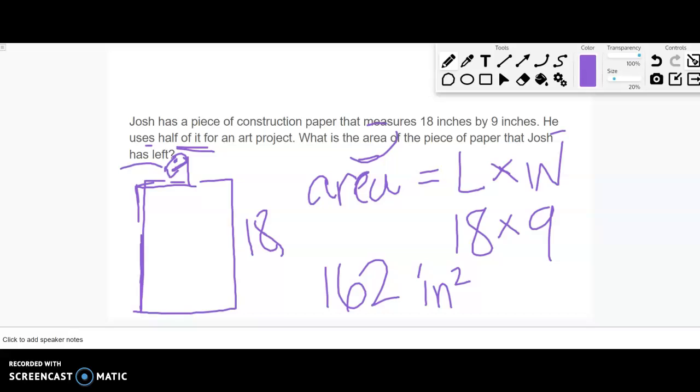Now it says he uses half of it for an art project, so I need to take this - how can I find half of something? I'm just splitting it into two equal groups. So I can just split this in two, and then I'll know how much he used and also how much he had left. Because if he used half of it, that means he also had half of it left. So 162 divided by 2 would be 81 square inches of paper.